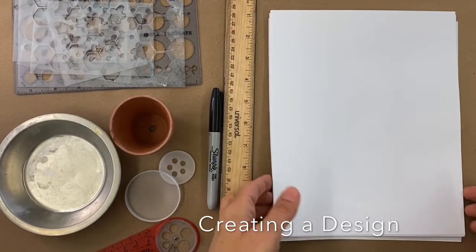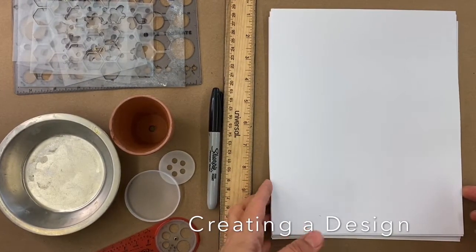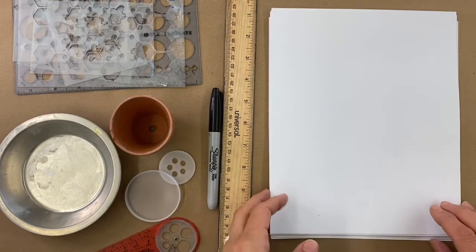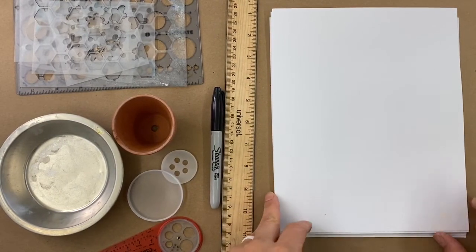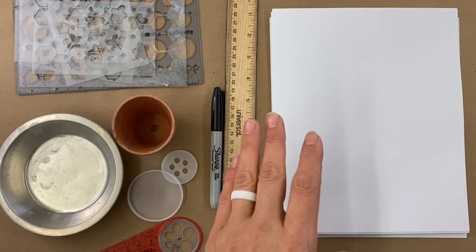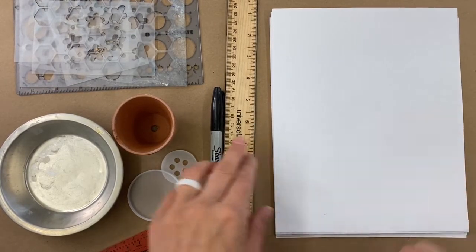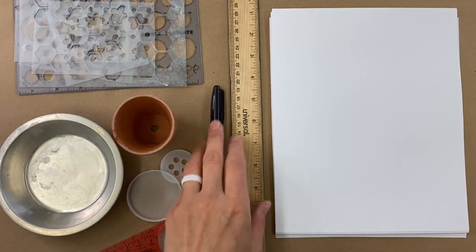These are the materials you're going to need for step one of making your Chihuly inspired sculpture. You need copy paper, a sharpie, and a ruler.